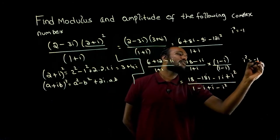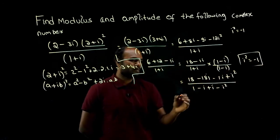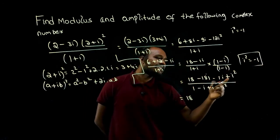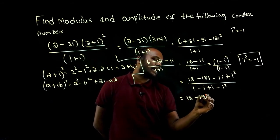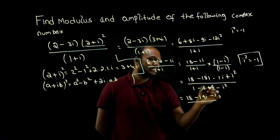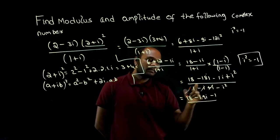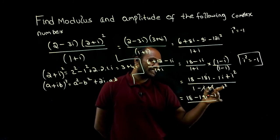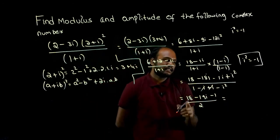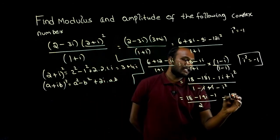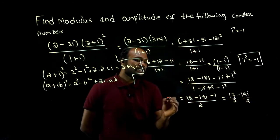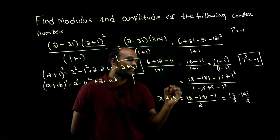The i² value is minus 1. Substituting: 18 minus 18i minus i gives minus 19i, and i² = minus 1. In the denominator, those terms cancel and i² = minus 1 so minus into minus is plus, giving 1 plus 1 equals 2. So I get 18 minus 1 equals 17, giving 17 minus 19i, divided by 2. This is the x plus iy form.